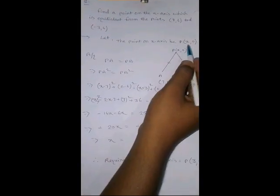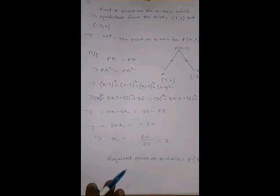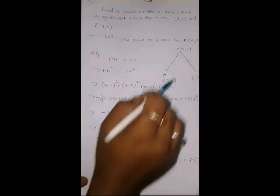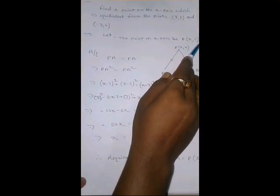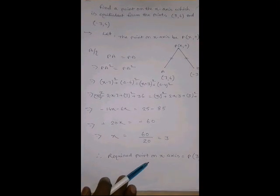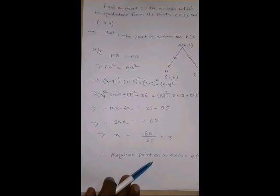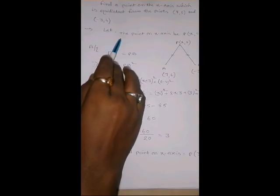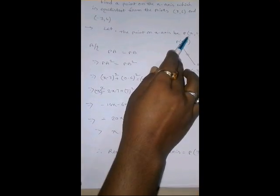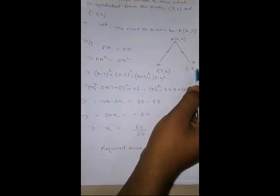And, here x coordinate is unknown. So, I have assumed that the point is x comma 0. If the question will come on y axis, then you will assume this is 0 comma y. Remember, on x axis, y coordinate is 0. Whereas, on y axis, the x coordinate is 0. Let the point on x axis be x comma 0. And, these are the two points.